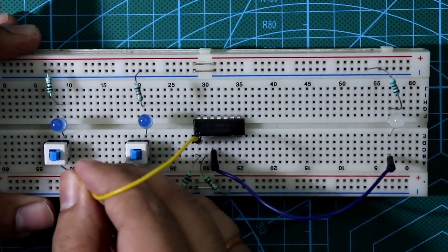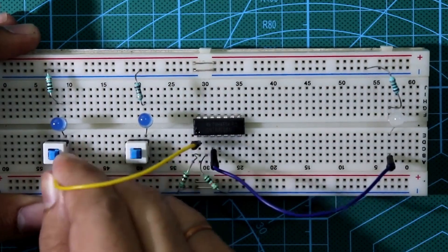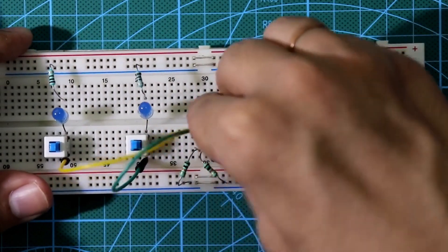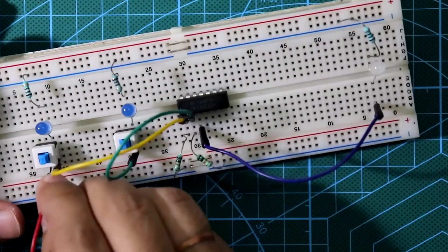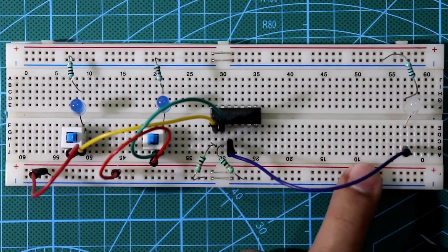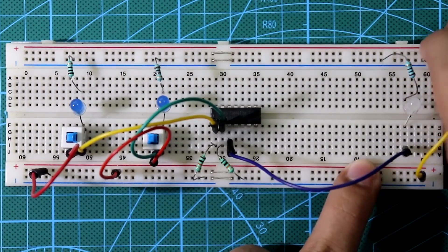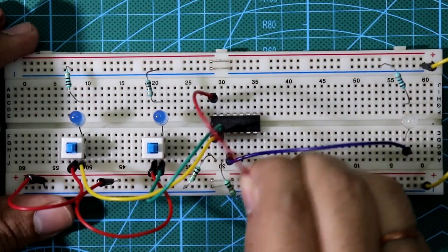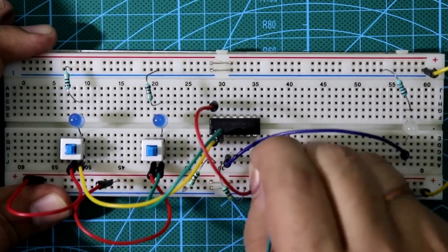One input is connected to one switch. Another input is connected to pin number 2. And then other end of the switch will go to the plus VCC. Connect both the ground rail. Connect pin number 14 to the plus VCC and pin number 7 to the ground.